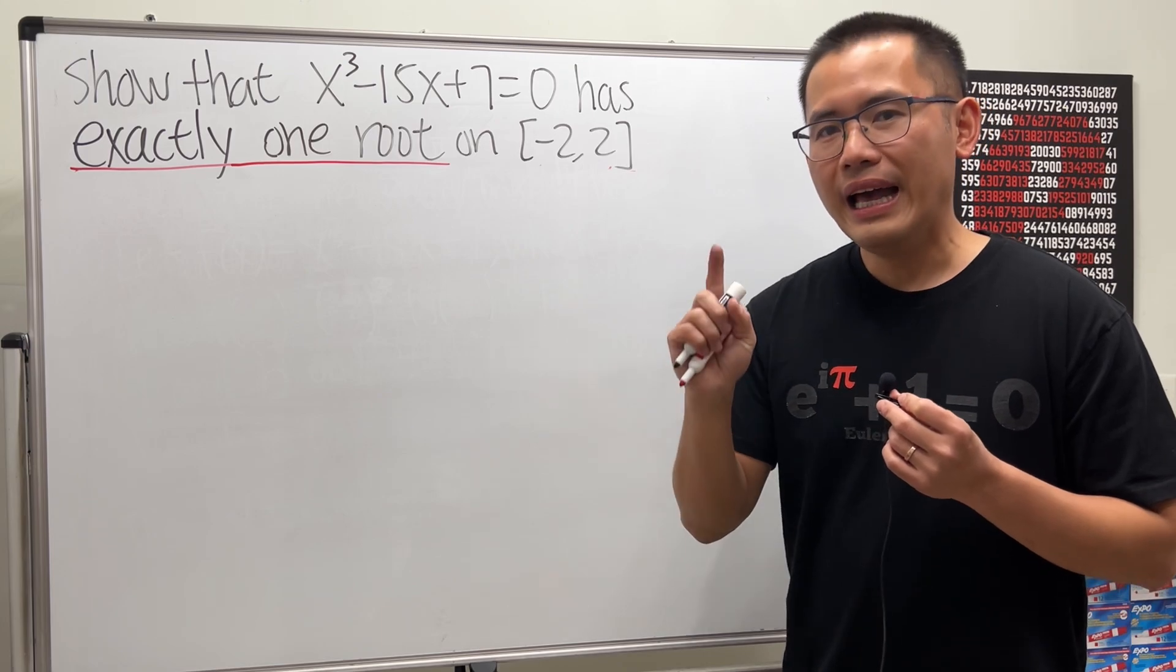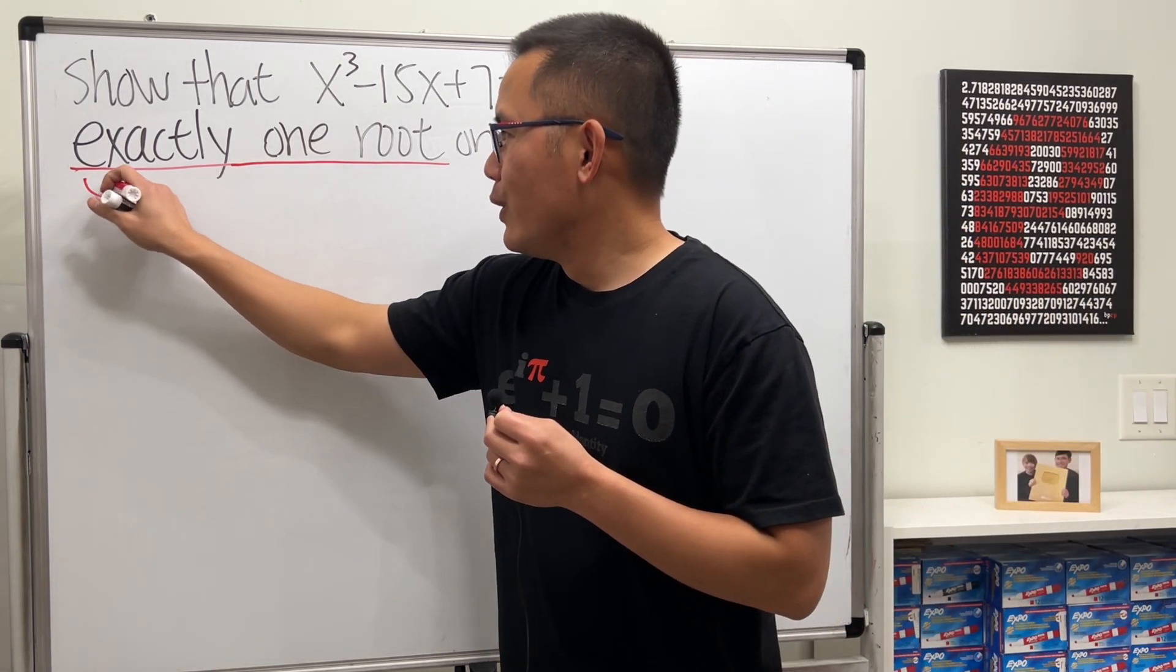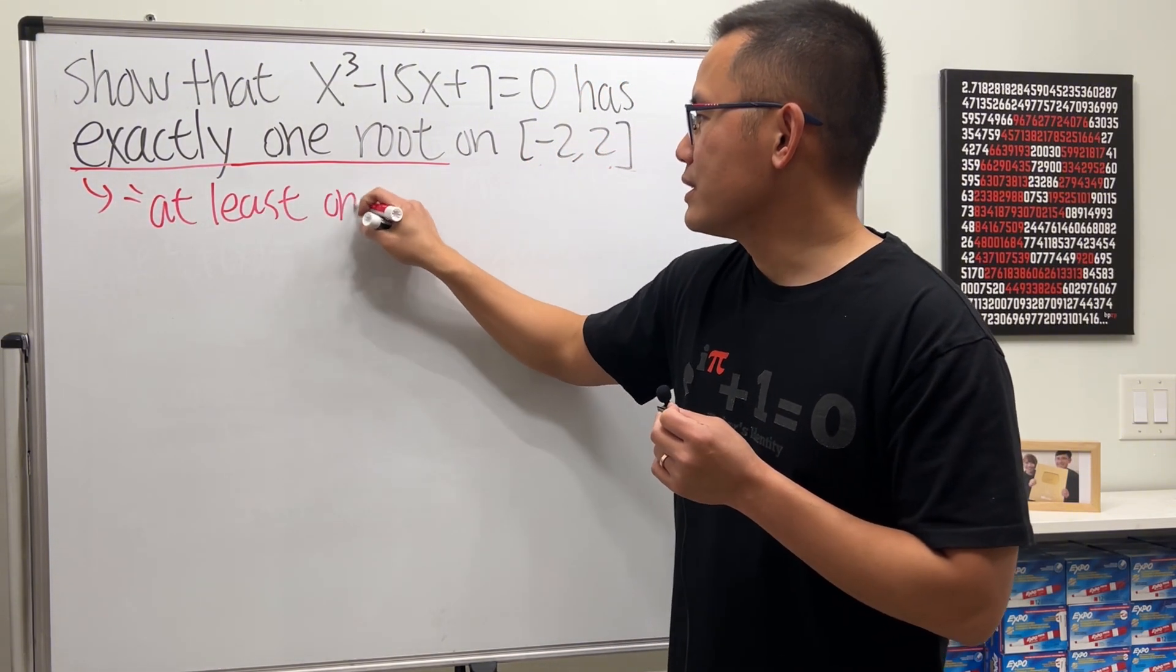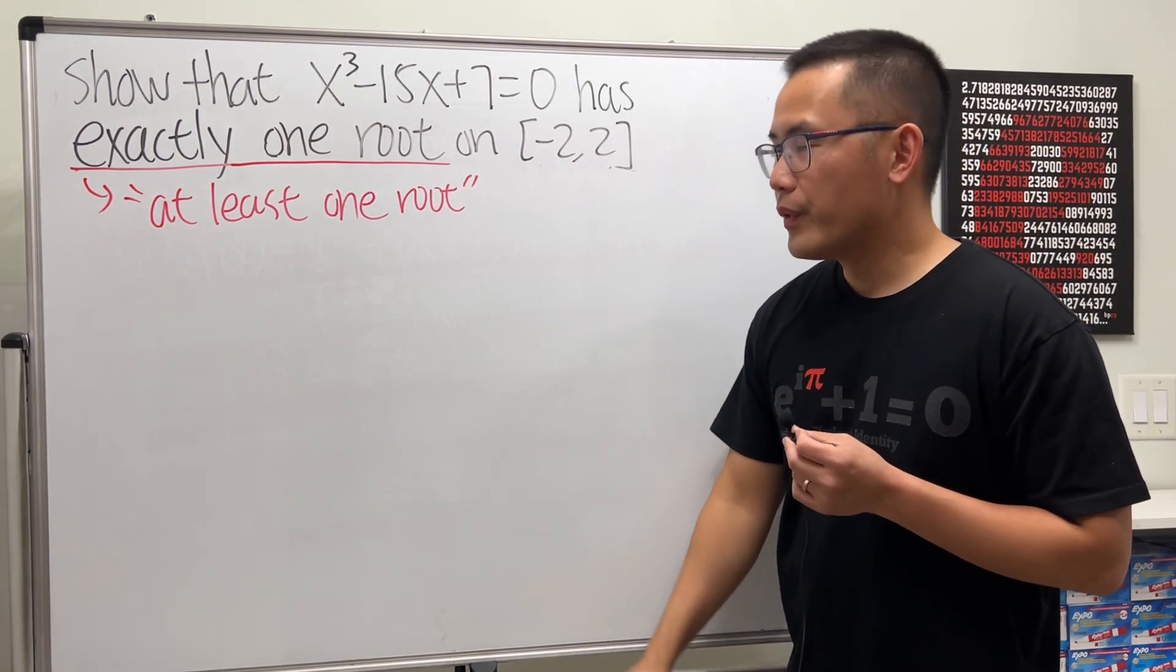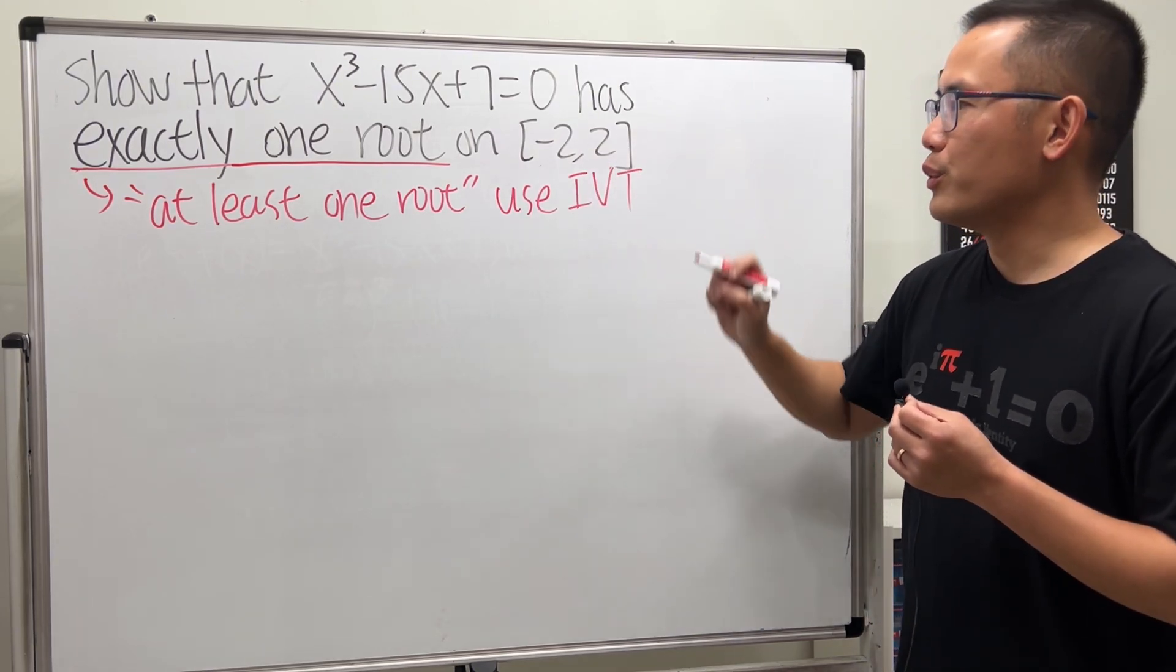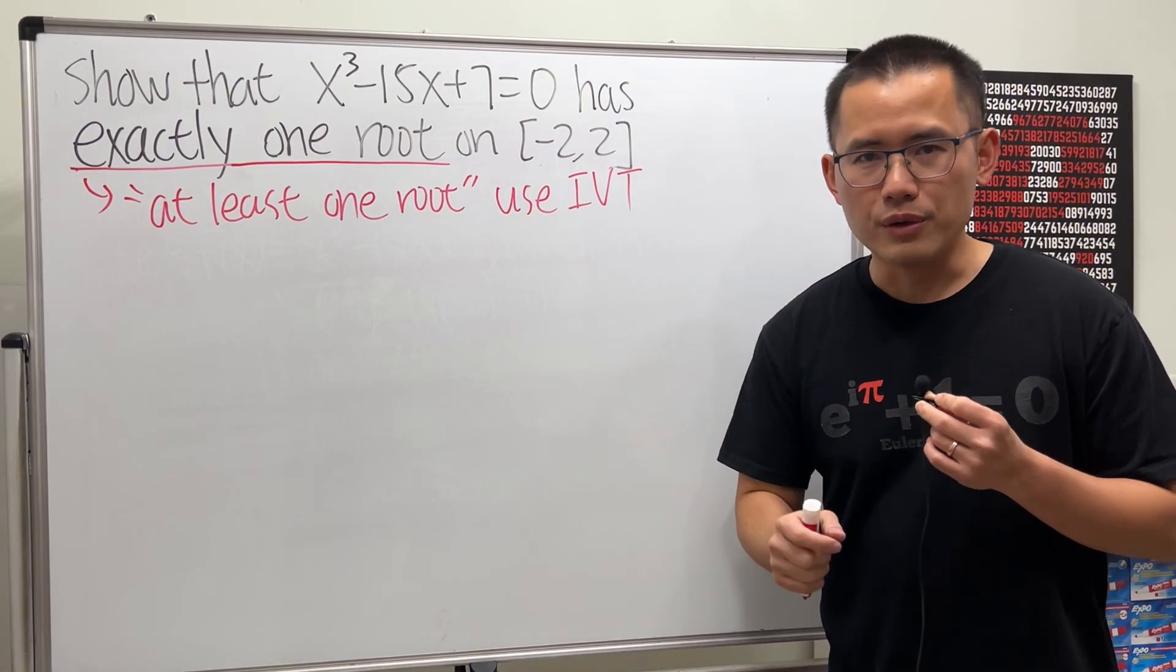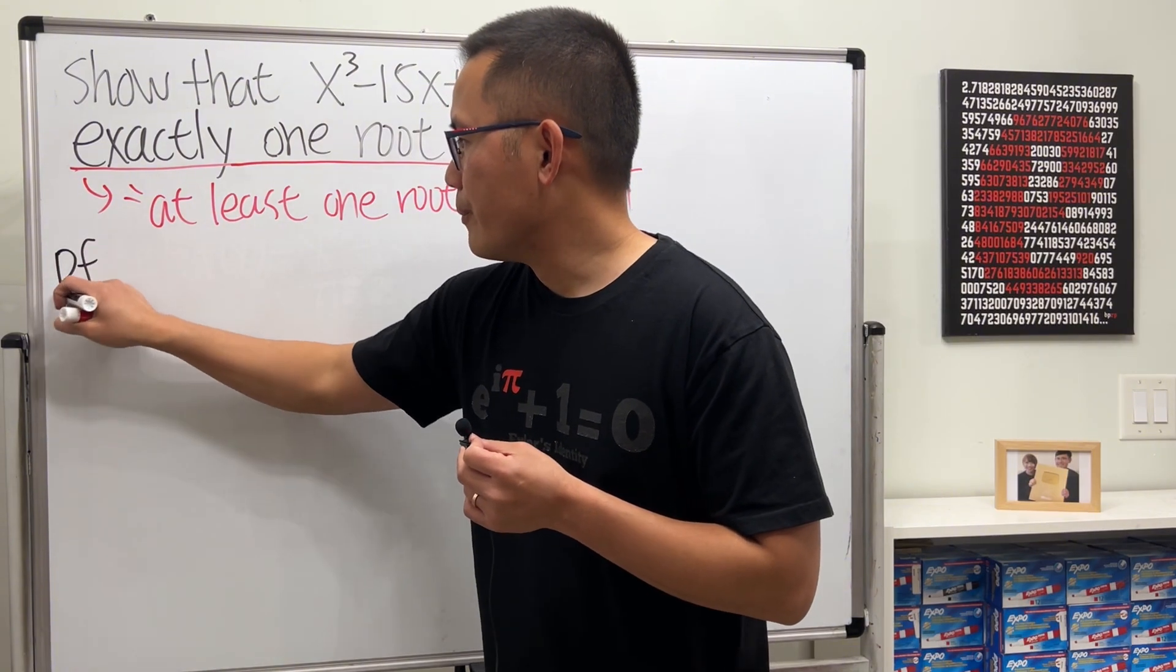At least one and also at most one. Let me write down the note for you guys. First, to do at least one root on a certain interval we will have to use the Intermediate Value Theorem, and then for the at most one root we will have to use contradiction and also Rolle's Theorem. But let's focus on this one first. Here we go, proof.